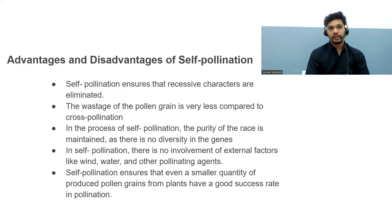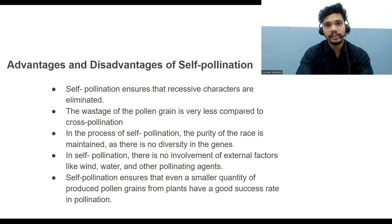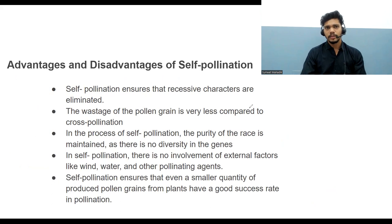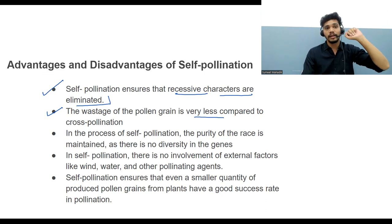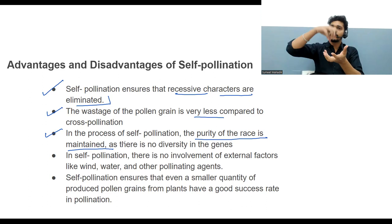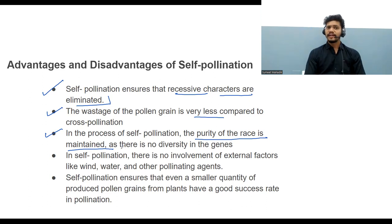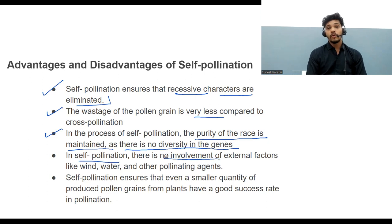The advantages of self-pollination: it is quick, requiring only one flower. It ensures that recessive characters are eliminated so only dominant characters remain. The wastage of pollen grains is very less because they don't need to travel far. Self-pollination does not require any external pollinating agents or external factors.